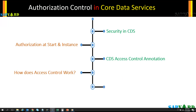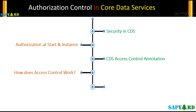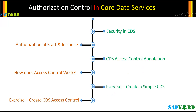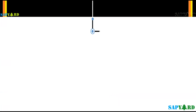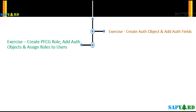You cannot really learn CDS authorization if you do not know how to create a CDS view. So as our first exercise, we will create a simple CDS view. Next, we will create a CDS access control. CDS view and CDS access control are two different objects in CDS — they are saved as two different objects in the SAP transport. The core of this course is authorization objects and authorization fields. We will teach you how to create a PFCG role, add authorization objects, and assign roles to SAP users. After this exercise, you will know exactly what your SAP security admin does day in and day out.